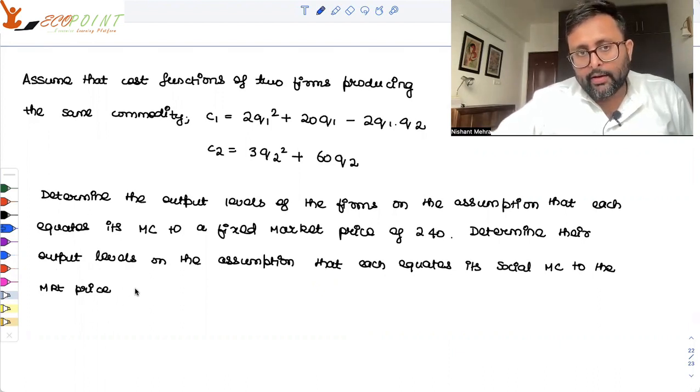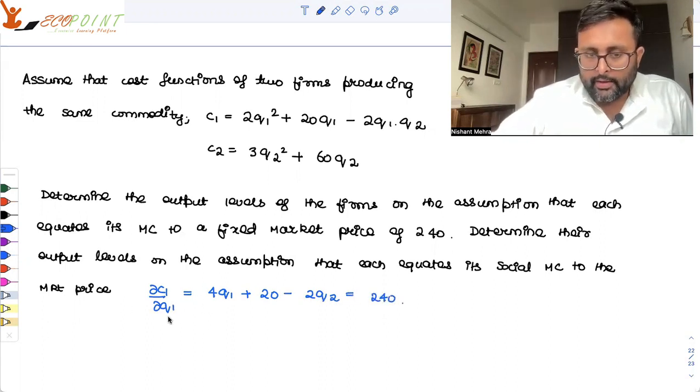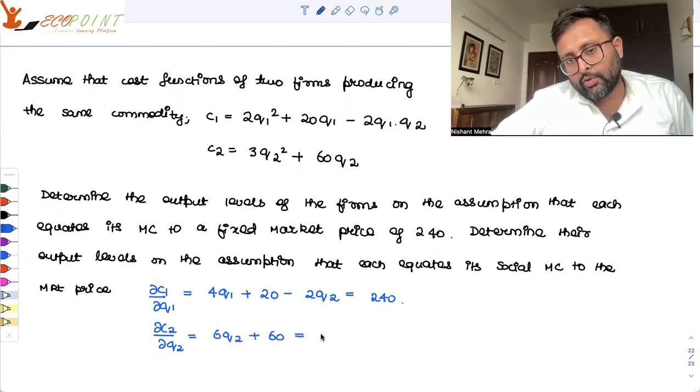So when they equate each marginal cost to the market price, what is that? Del C1 by Del Q1. What will that be? 4Q1 plus 20 minus 2Q2. This should be equal to the market price. Right? Del C2 by Del Q2 is going to be 6Q2 plus 60 equals to 240.